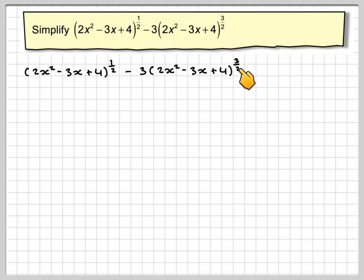Right, what we've got to do is separate this term. 3/2 is the same as 1 plus 1/2. So we're going to rewrite this part as (2x² - 3x + 4)^(1/2) times (2x² - 3x + 4)^1. One plus a half makes 3/2, so that's okay.